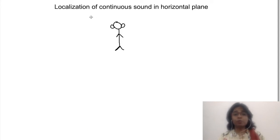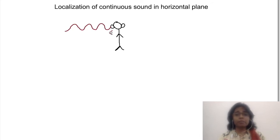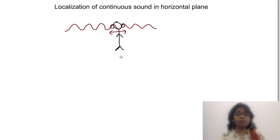However, suppose you walk into a room where there is a continuous tone. For this kind of sound, in the beginning there will be a time difference for a split second, but afterwards it will be continuously present in both ears without any time difference. So if we miss that initial time difference, we will not be able to detect where the sound is coming from.